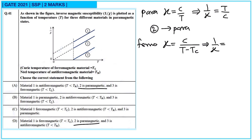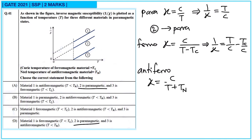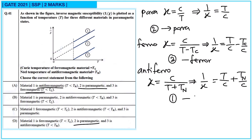For a ferromagnetic material, χ = C/(T − Tc), so 1/χ = T/C − Tc/C — a straight line with a negative intercept on the temperature axis. For an antiferromagnetic material, χ = C/(T + TN), so 1/χ = T/C + TN/C — a straight line with a positive intercept. So material 1 is antiferromagnetic and material 3 is ferromagnetic. Option A is correct.